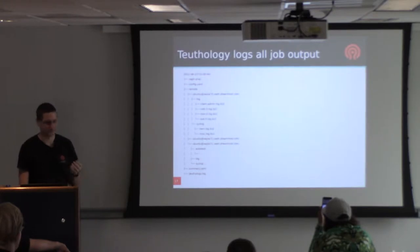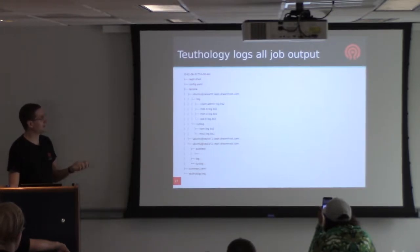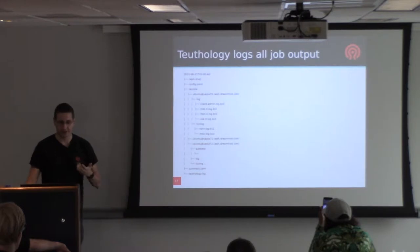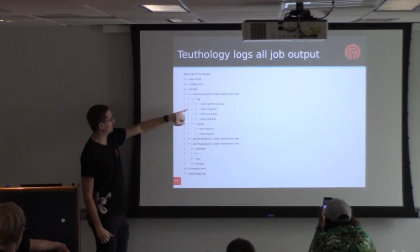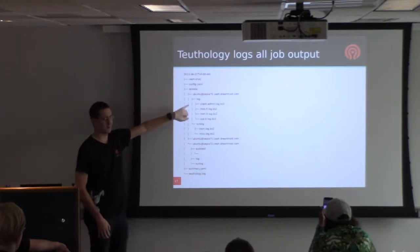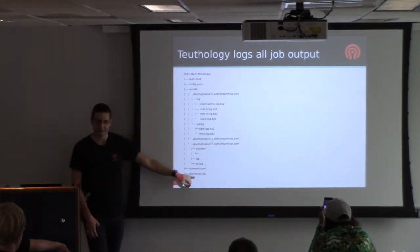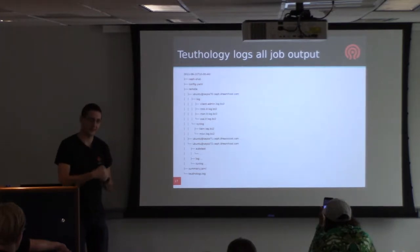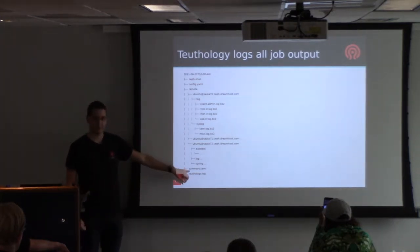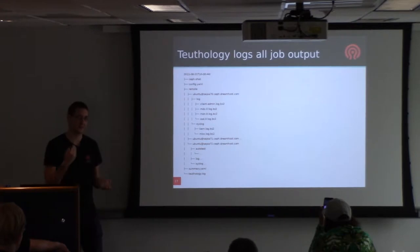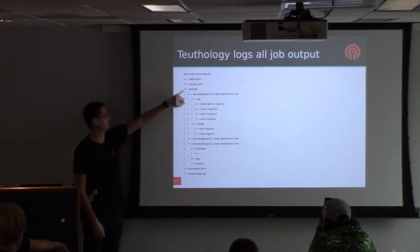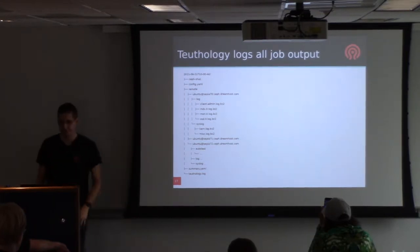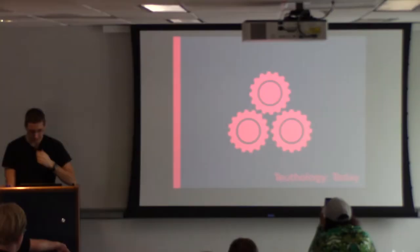When it's done with a job, Teuthology logs all output into an archive directory you specify. You get a remote folder containing all the logs from all the nodes in the system, a Teuthology log file with the actual test-running output, a summary.yaml file that specifies whether the test failed or succeeded with the failure reason, the original config that was used, and the version of Ceph it was run on.